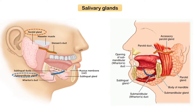The submandibular gland is located medial to and under the partial cover of the mandible. Wharton's duct extends anteriorly in the floor of the mouth and opens in the oral cavity at the sublingual papilla, present at the side of the frenulum of the tongue. The main excretory duct of the sublingual gland, Bartholin's duct, may join Wharton's duct and open into the oral cavity. There are also numerous small sublingual ducts known as ducts of Rivinus, which may join the submandibular duct or open separately into the floor of the mouth.